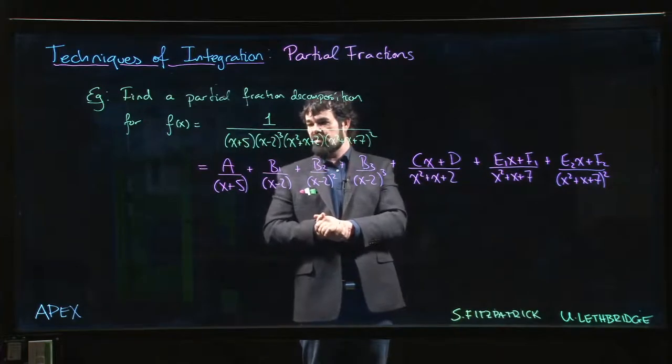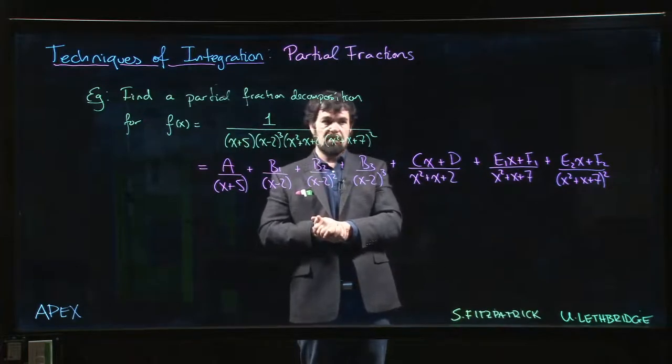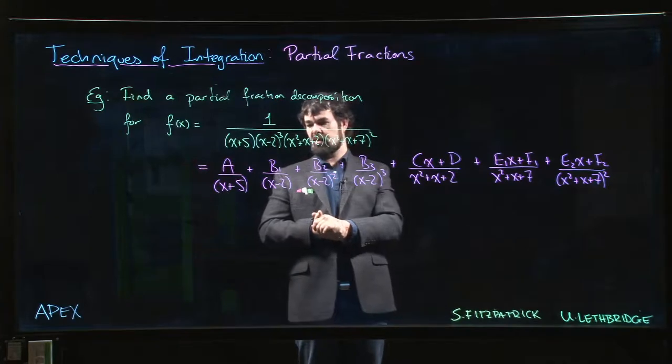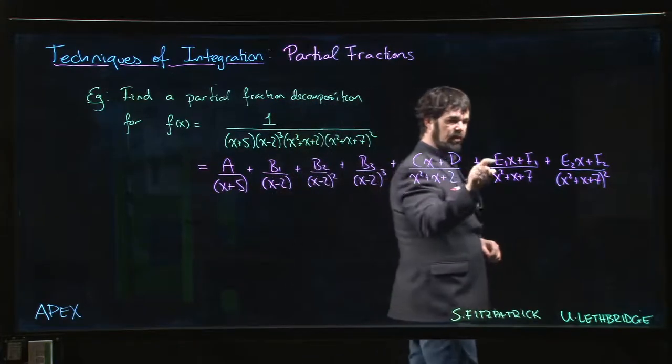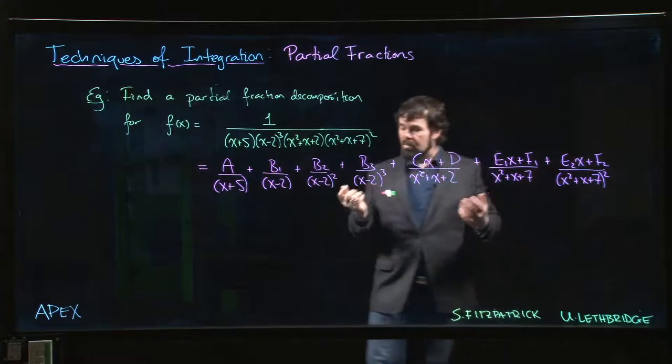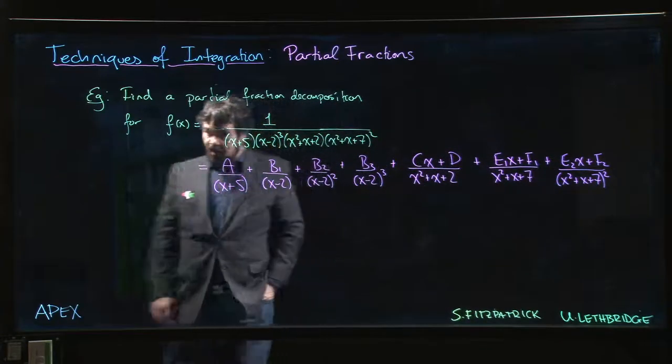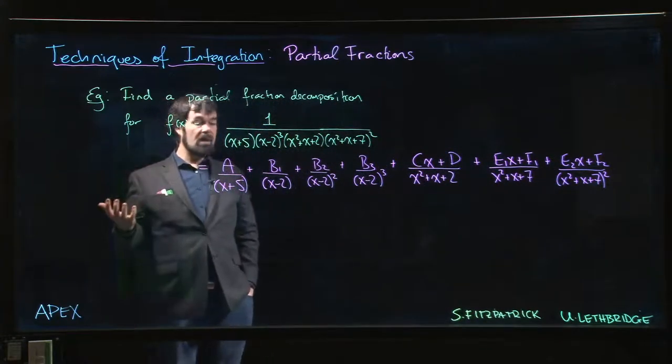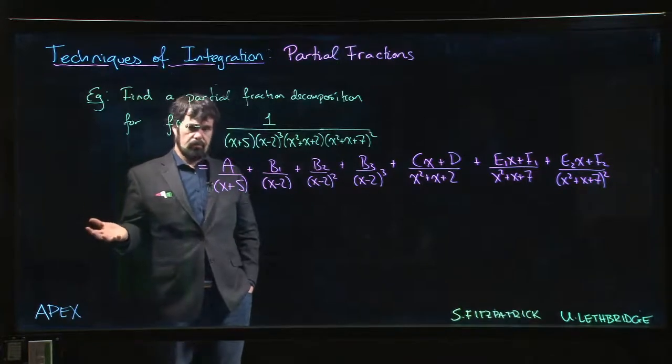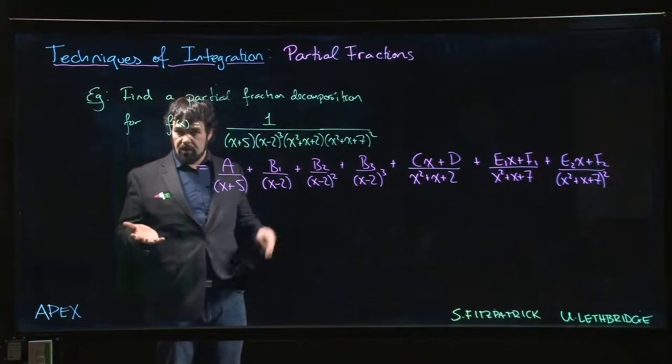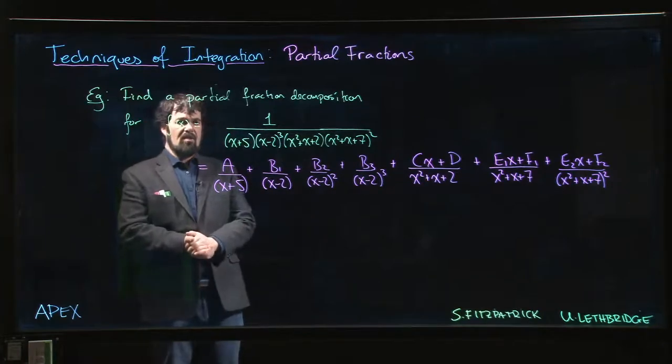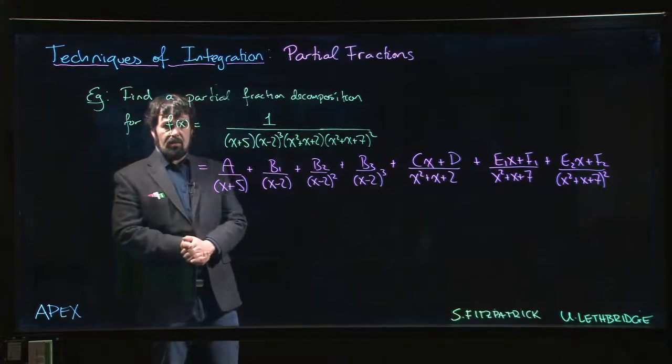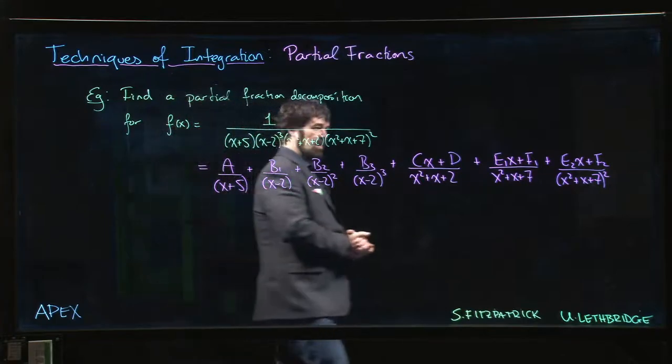When you equate those coefficients, what you get is a really big system of equations. You get a system—it's going to be, well, how many variables do we have? One, two, three, four, five, six, seven, eight, nine, ten. You have a system of ten equations for ten unknowns, which, if you've taken a course in linear algebra, is something that you in principle can solve. But even a good linear algebra student doesn't want to solve ten equations in ten unknowns without the aid of a computer.